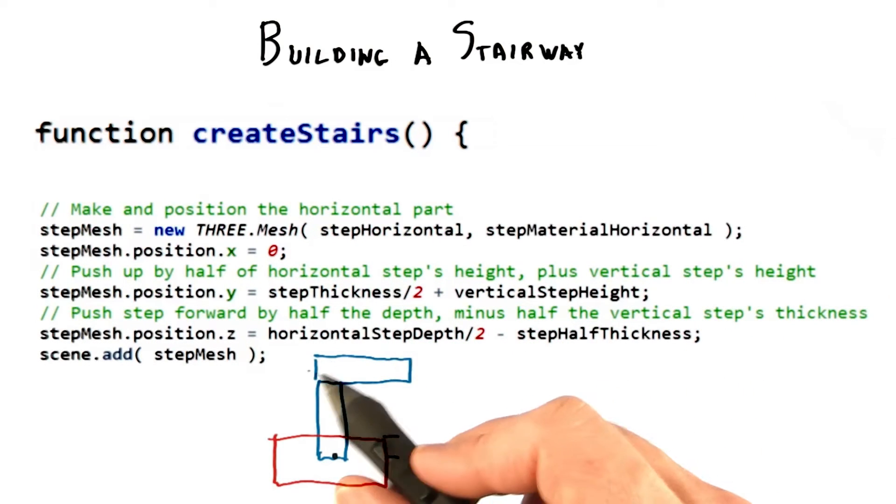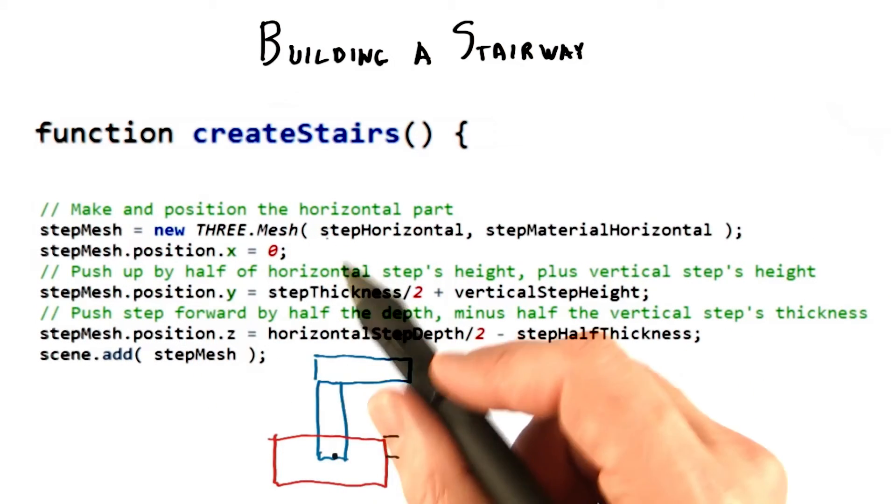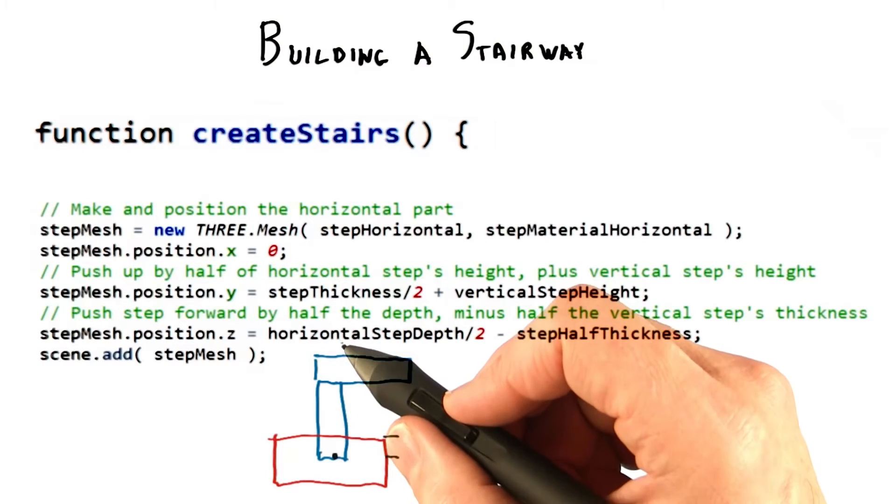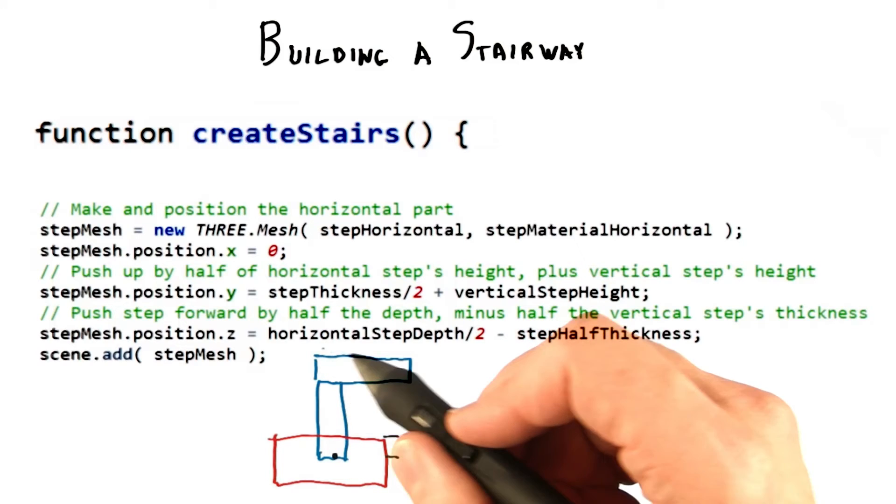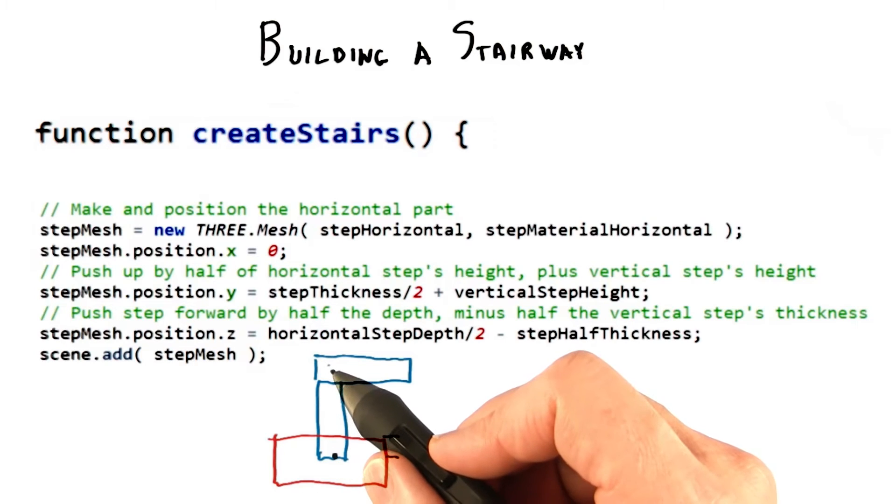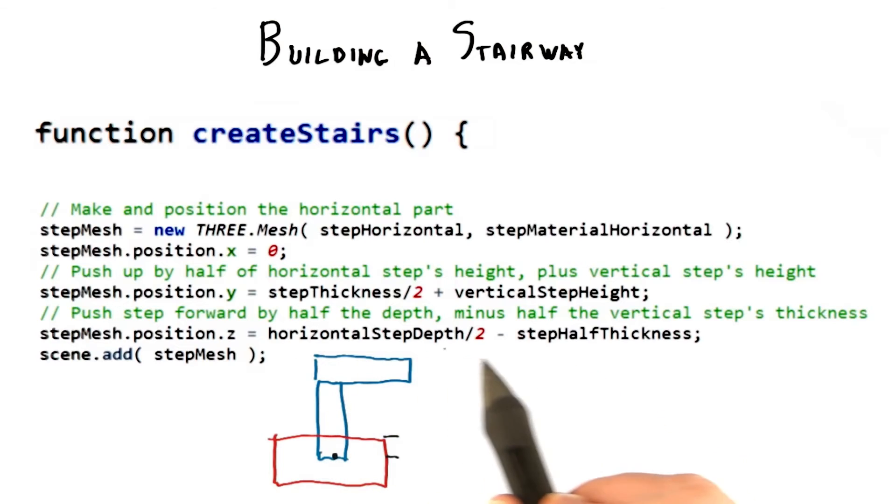The horizontal piece making up the flat part of the step is created with this code. In this case, we first push the step up half its thickness so it rests on the plane, then push it up the rest of the height of the vertical piece so that it rests on top. The z position is also changed, pushing the plank so that one edge is at the origin, and then it pulls back a bit so that it rests firmly on the vertical piece.